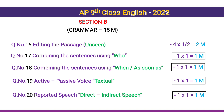Question 17: Combining sentences using relative pronouns — who, which, that — 1 question for 1 mark. Question 18: Combining sentences using 'when,' 'as soon as,' or 'no sooner' — 1 question for 1 mark. Question 19: Active and passive voice, textual — 1 question for 1 mark. Question 20: Reported speech, direct and indirect — 1 mark.